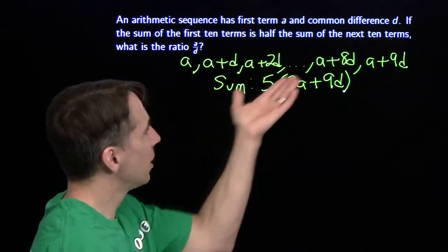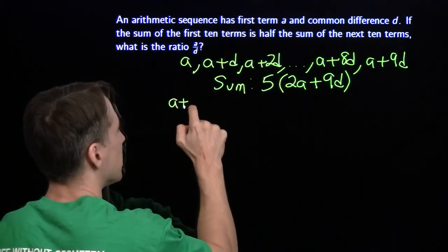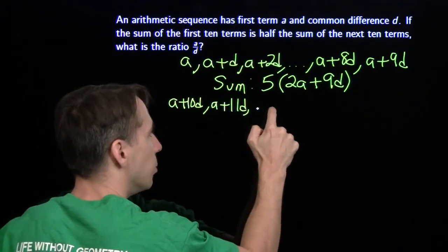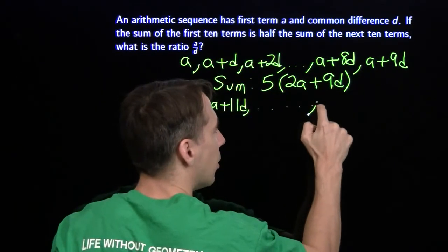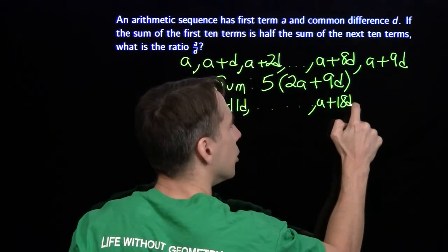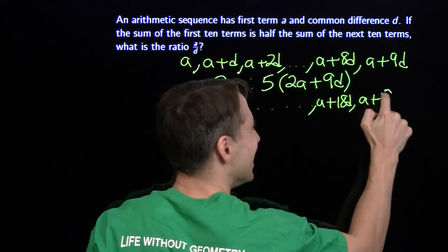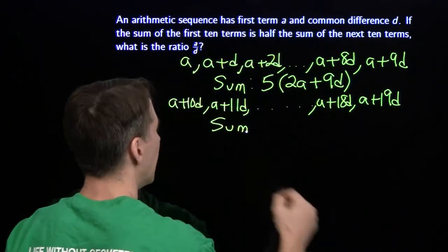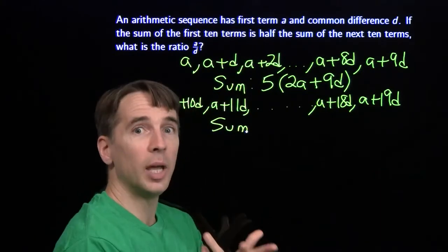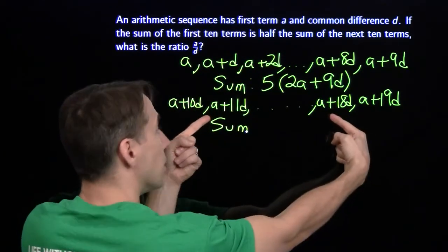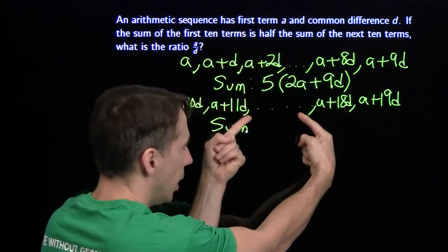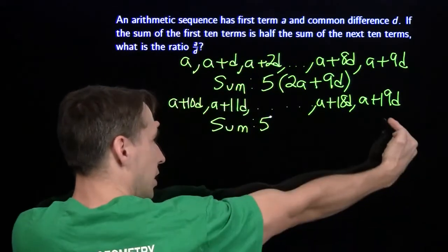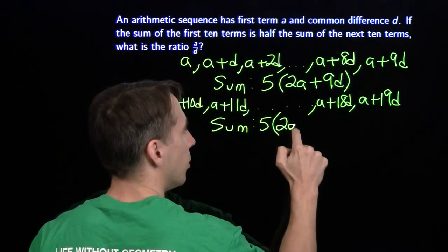Moving on to the next ten terms: they start at A plus 10D, then A plus 11D, and keep going, with the last two terms being A plus 18D and A plus 19D. Applying the same pairing trick, the first and last of this group sum to 2A plus 29D. With ten terms giving five pairs, the sum of the next ten terms is 5 times (2A plus 29D).